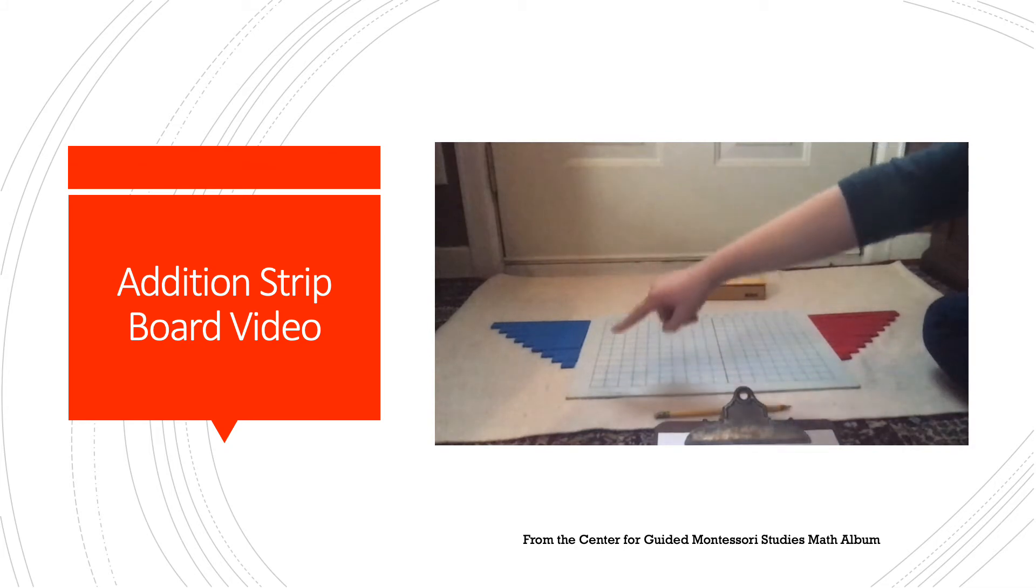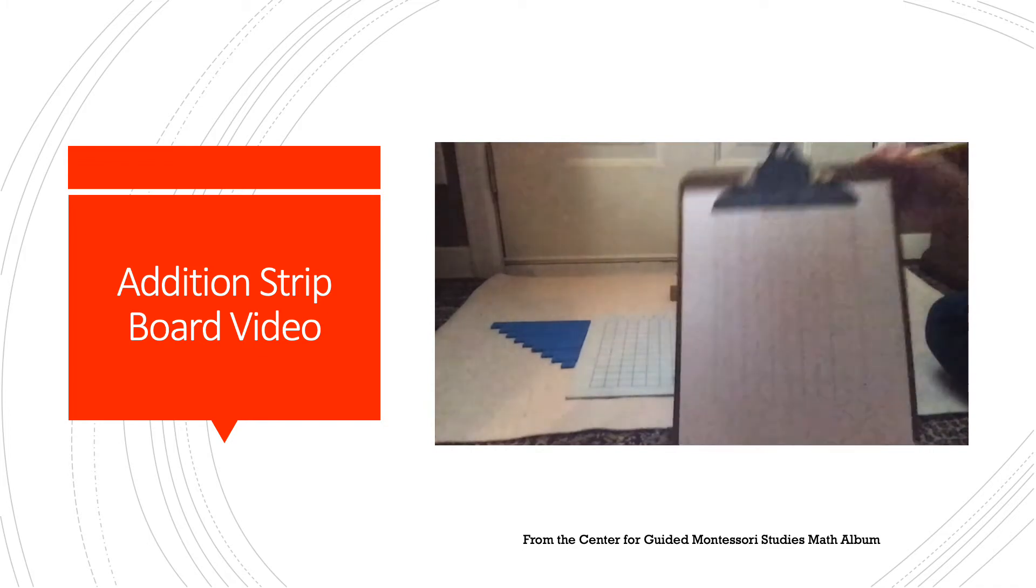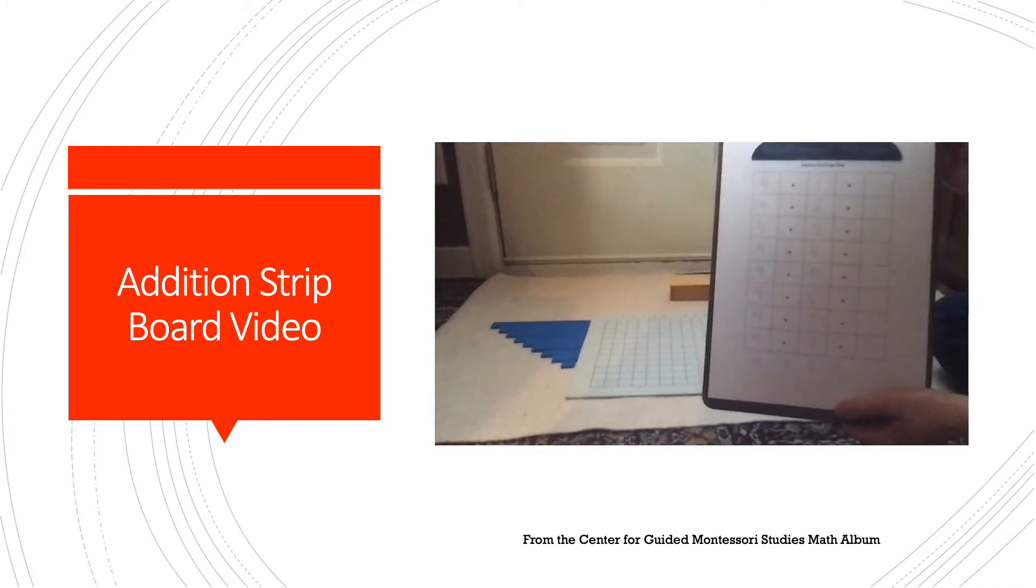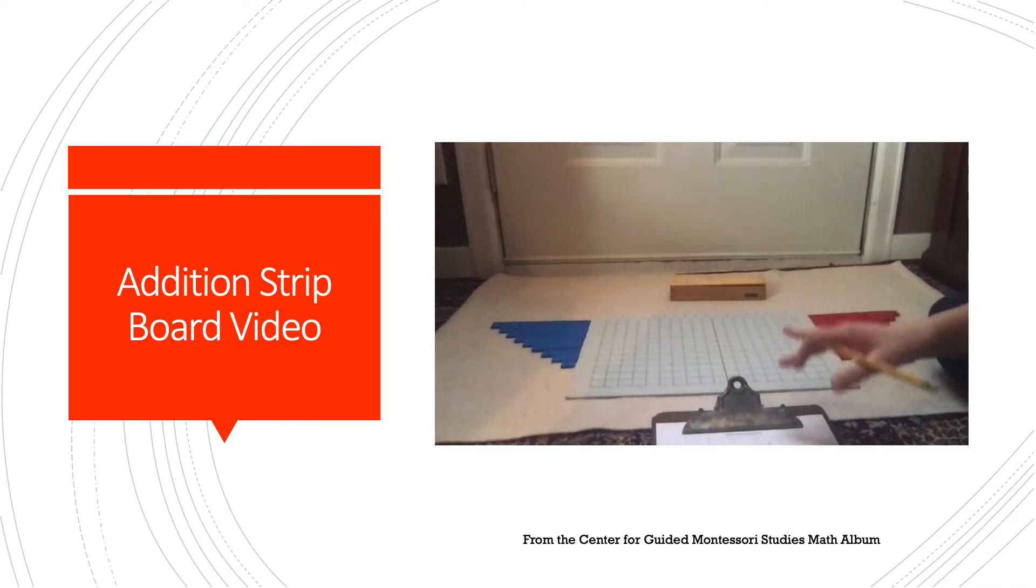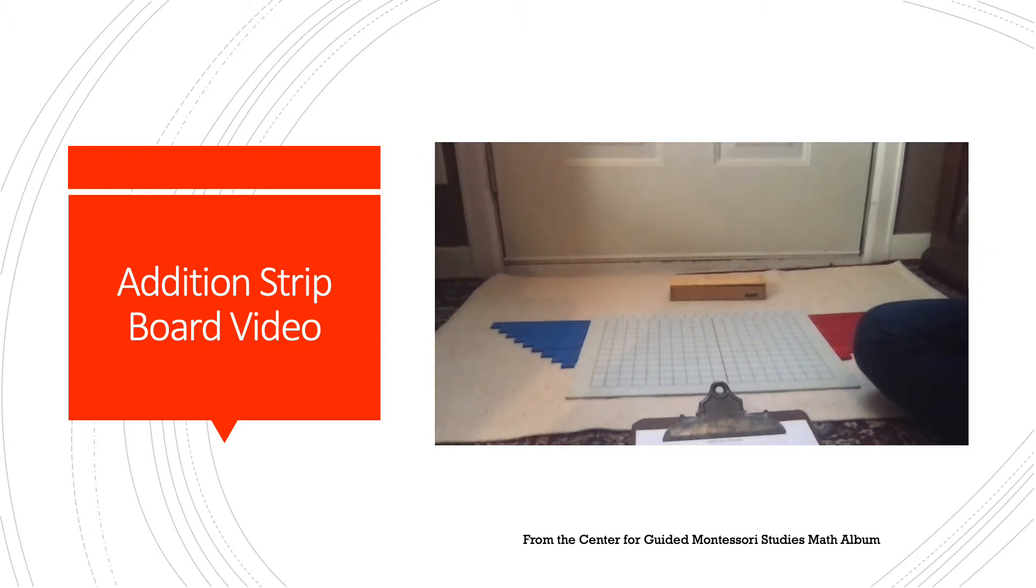I also have a pencil and a clipboard of addition problems where I can record my answers. For this lesson today, I'm going to focus on adding with fours. The child, after they do this, can practice adding with the fives, the six combinations, and then they can mix them up and work with combinations to ten and beyond. For this lesson, I am just going to work my way down through these problems and record my answers. Here we go.